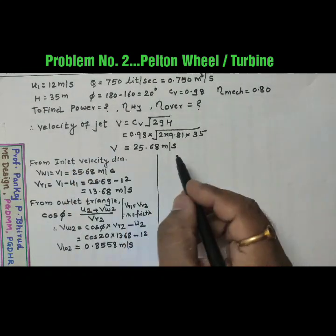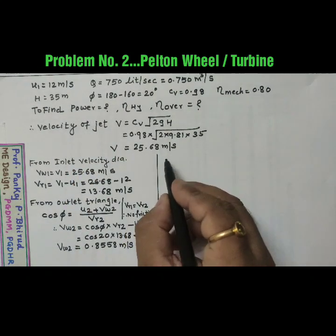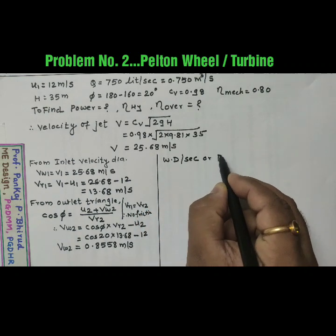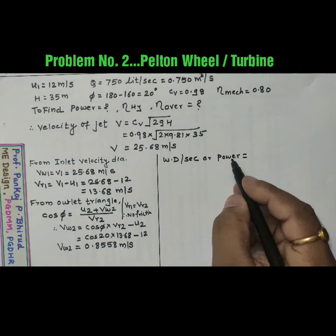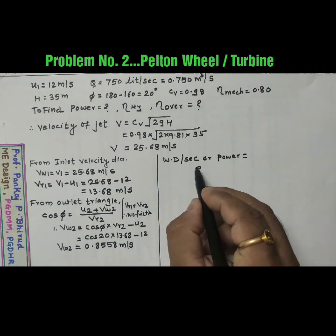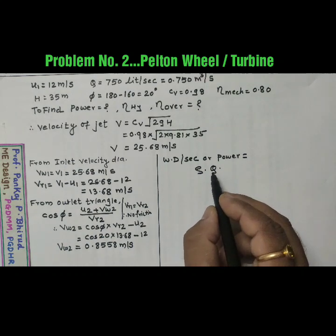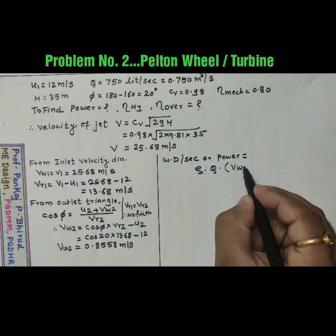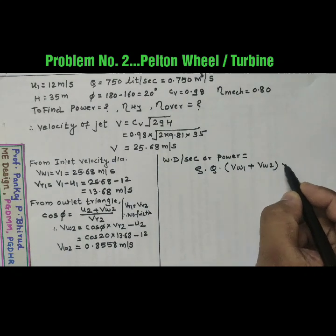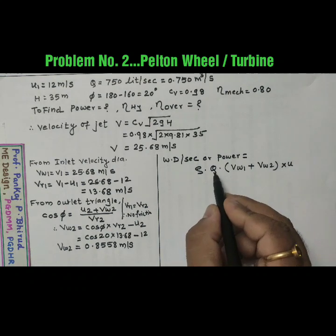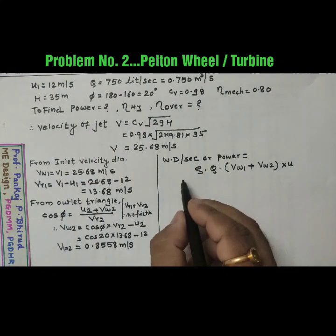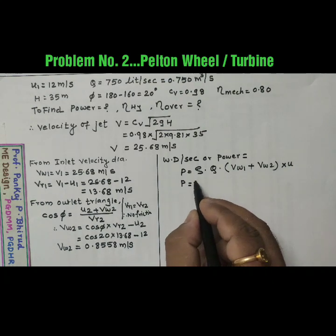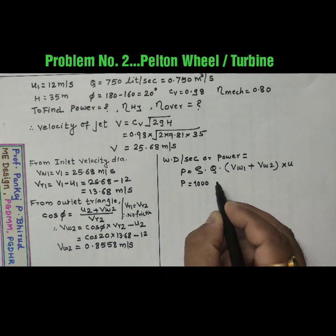Now calculate first work done per second. Power is equal to rho Q. Now Q is A V, so rho A V in bracket Vw1 plus Vw2 into U. We have taken Q because in the example we have Q. So P equal to rho of water is 1000 into flow rate is 0.750 meter cube per second.